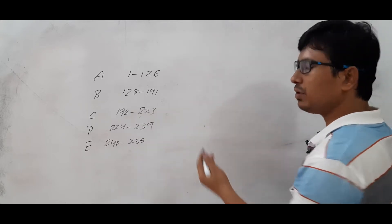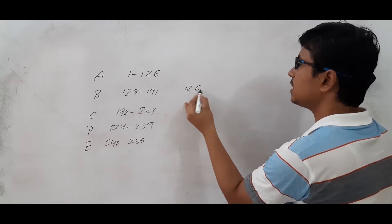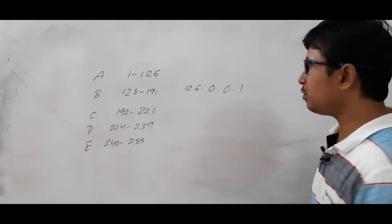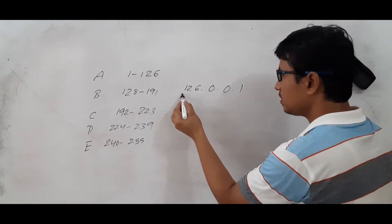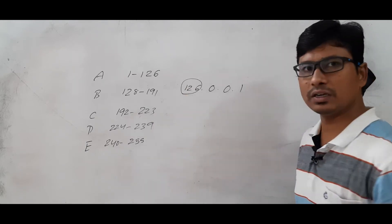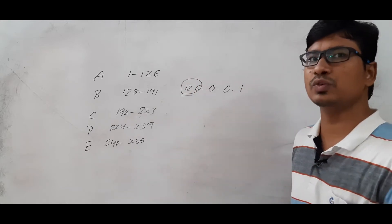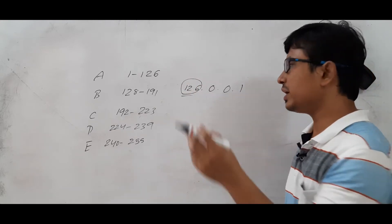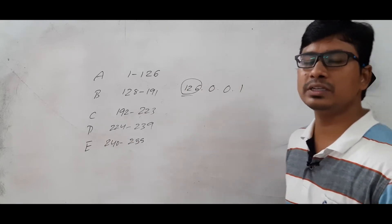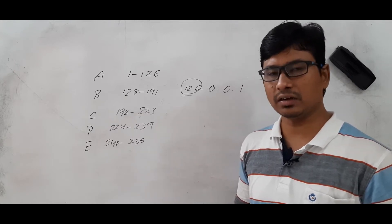Whenever we represent the IP address, we represent it in dotted decimal notation. By looking at the first decimal number in the first octet, we can say which class it belongs to. Once we identify the class, we can identify how many bits are there for the network ID and how many bits are there for the host ID.